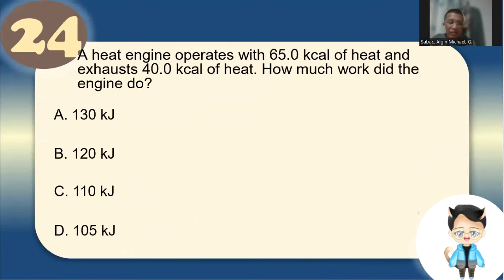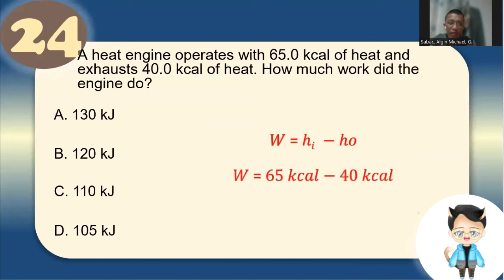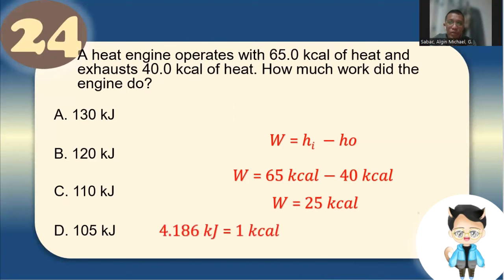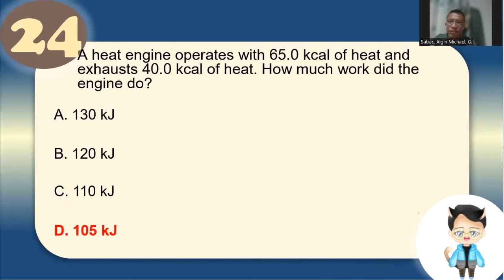Number 22: A heat engine operates with 65 kcal of heat and exhausts 40 kcal. How much work did the engine do? Using W = Qh - Qc: 65 - 40 = 25 kcal. Converting to kilojoules using 4.186 kJ = 1 kcal: 25 × 4.186 ≈ 105 kJ. The answer is 105 kJ.